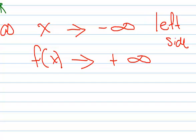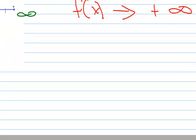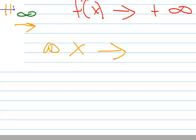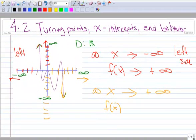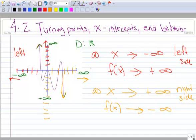Now let's talk about the right side. As x gets larger and larger, it's approaching positive infinity. As x approaches positive infinity, this piece keeps going down and down and down, so f(x) approaches negative infinity. On the right-hand side: as x approaches positive infinity, f(x) approaches negative infinity. In the next video lesson, we'll fill out a table and I'll show you how to write that formally.